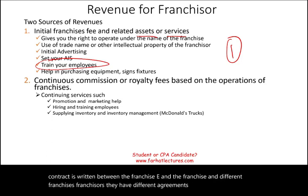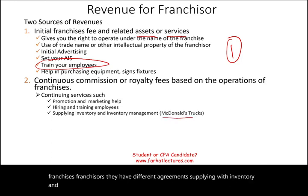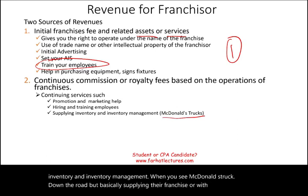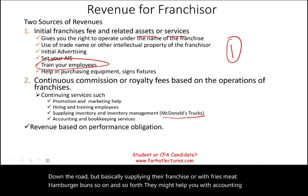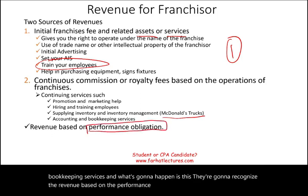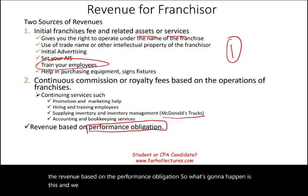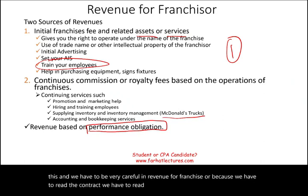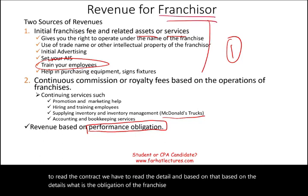They may also supply you with inventory and inventory management — like when you see a McDonald's truck on the road, they're basically supplying their franchisees with fries, meat, hamburger buns, and so on. They might also help with accounting and bookkeeping services. They're going to recognize the revenue based on the performance obligation. We have to read the contract carefully because based on those details, if they meet their obligation, they would recognize the revenue.